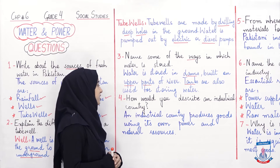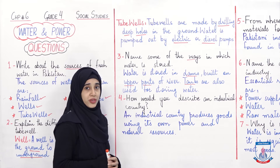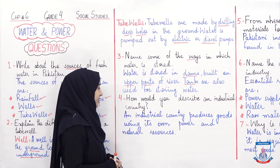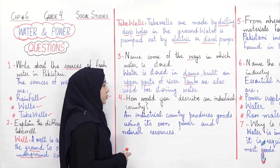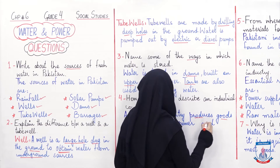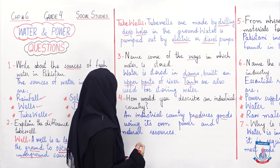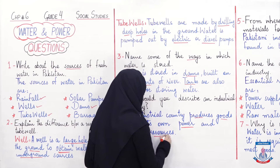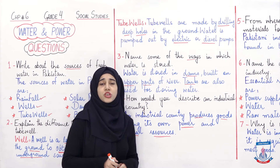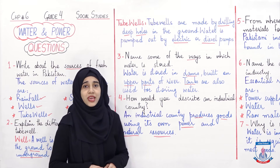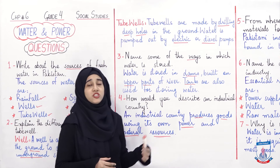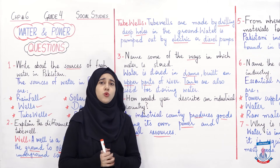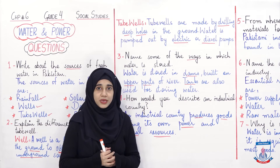Question four: how would you describe an industrial country? Aap ek industrial country ko kaise describe karo ge, uski kya definition doge. An industrial country produces goods using its own power and natural resources. So power and natural resources — jaise ke natural gas, coal, aur isi tarah jo different resources hain — unko use karte huye joh hum goods produce karte hain, is wajah se hum ek industrial country bhi kaha jata hai.